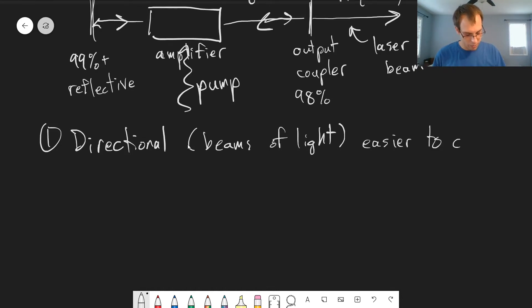And what that means is it's a lot easier to control. You know exactly which direction the light is going, and you can much more easily manipulate it. Whereas with a light bulb, a laser produces a beam, a light bulb produces light in every single direction.